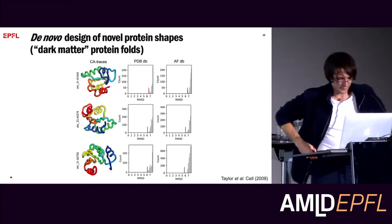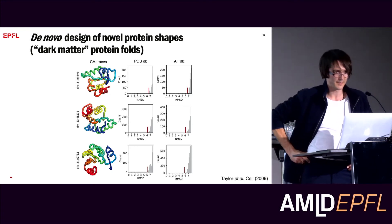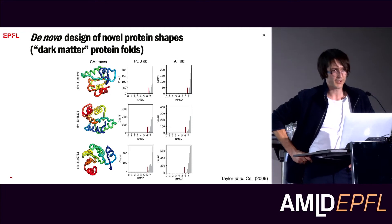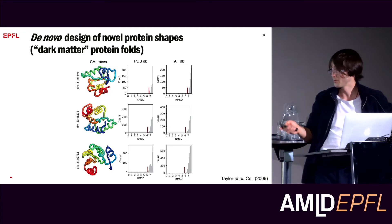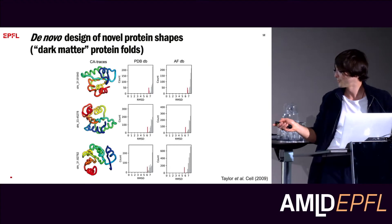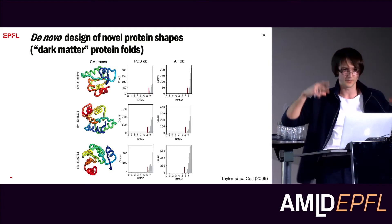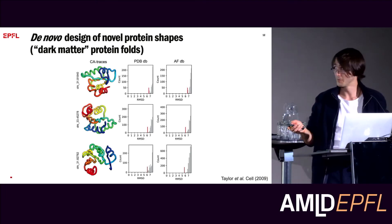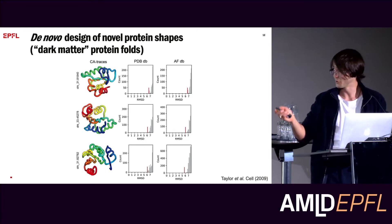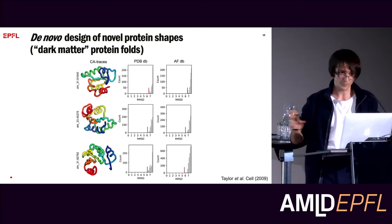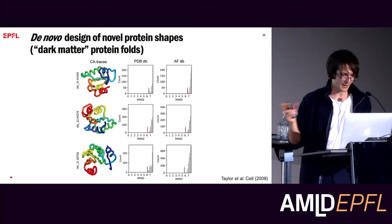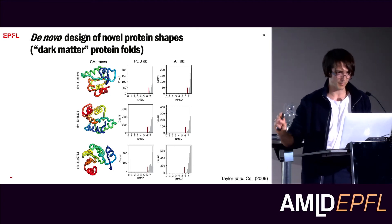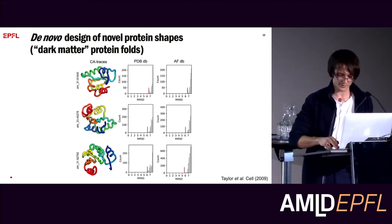We really wanted to see if we can design new proteins with that pipeline — design shapes that do not exist in nature. We selected three shapes from the Taylor paper, in which he analyzed the full space of protein structure and proposed protein folds that do not exist in nature. These are completely new folds, and we tried to sketch those and use the pipeline to generate sequences that will fold into those specific shapes.